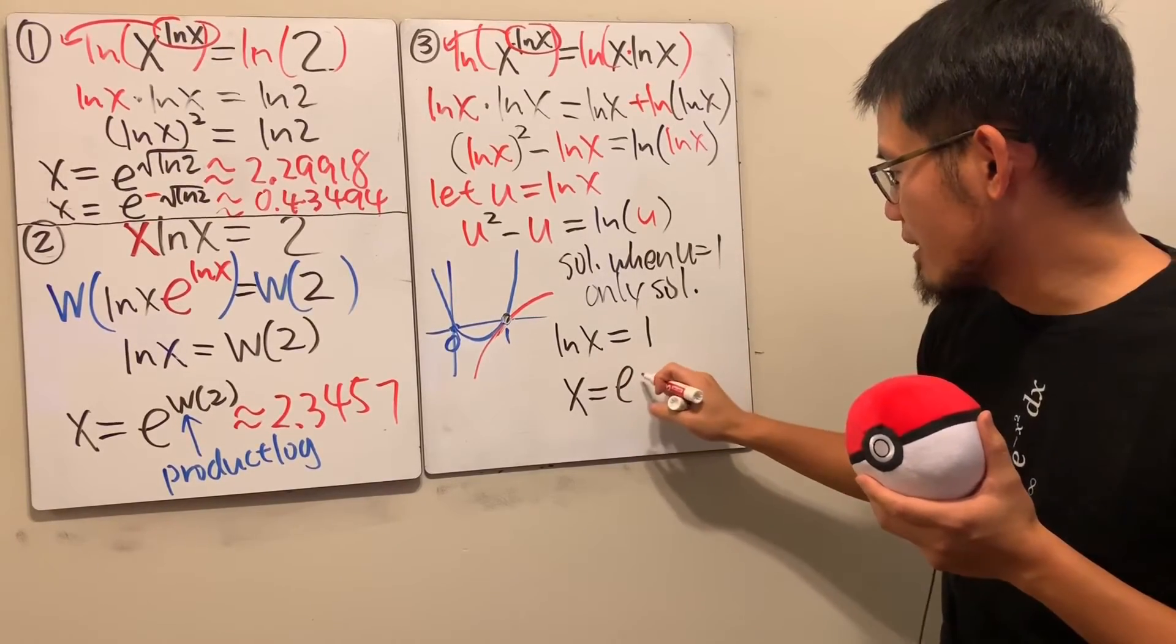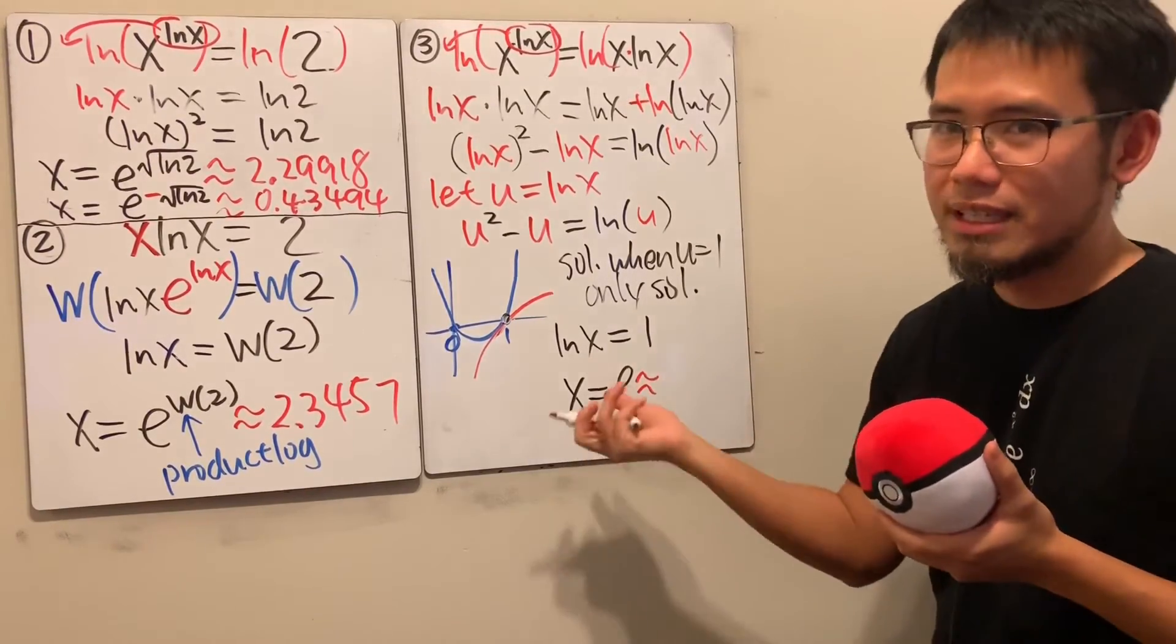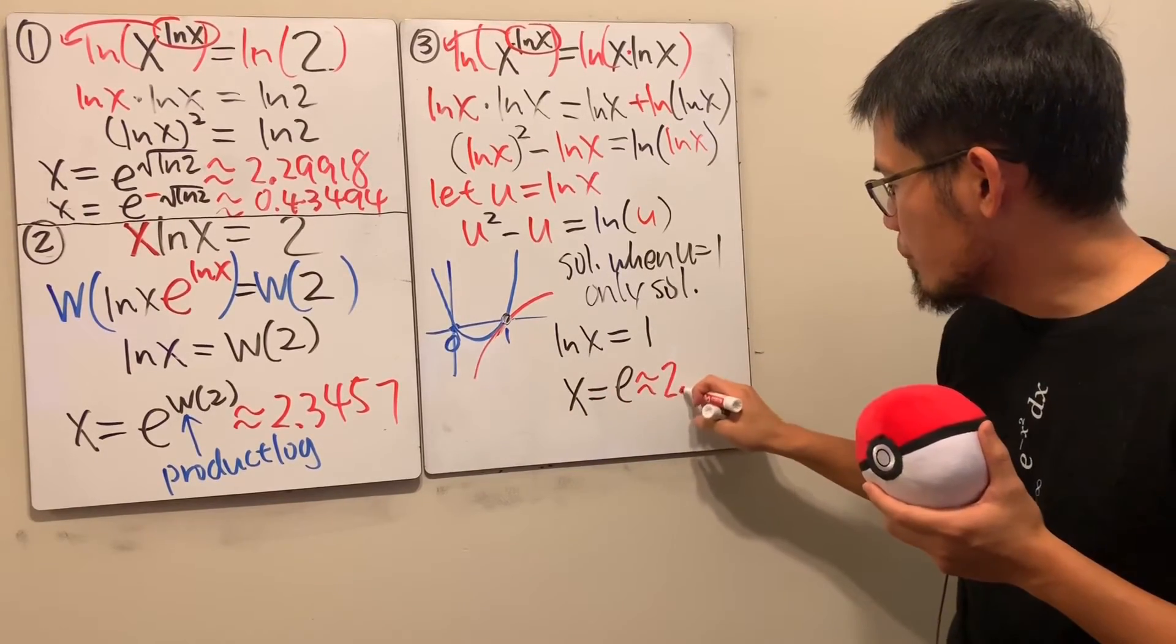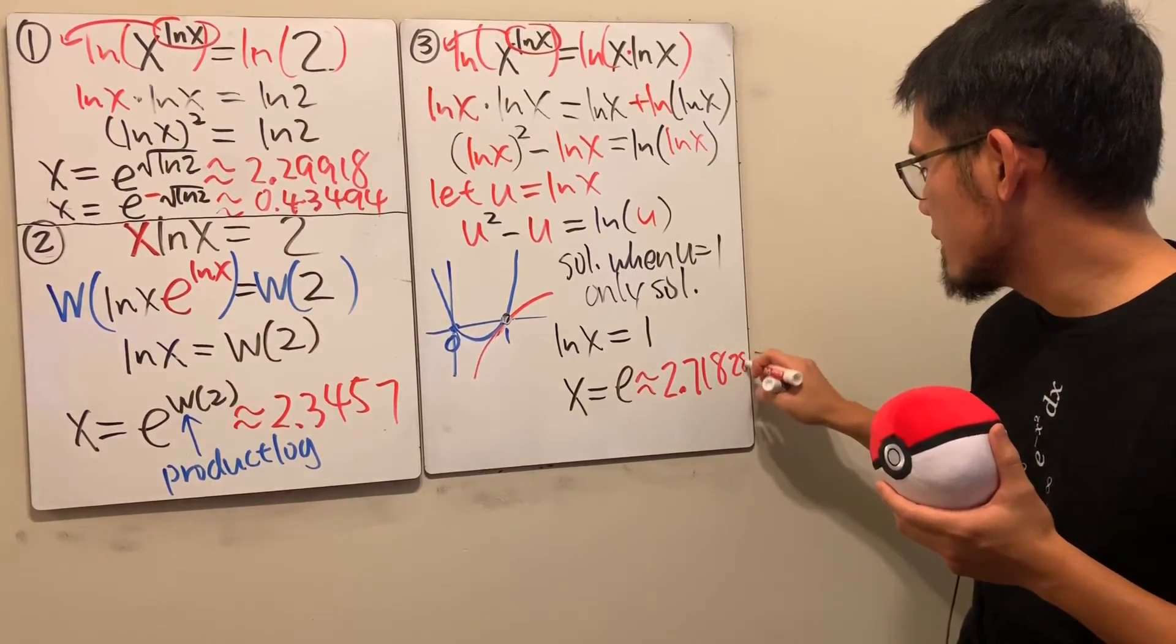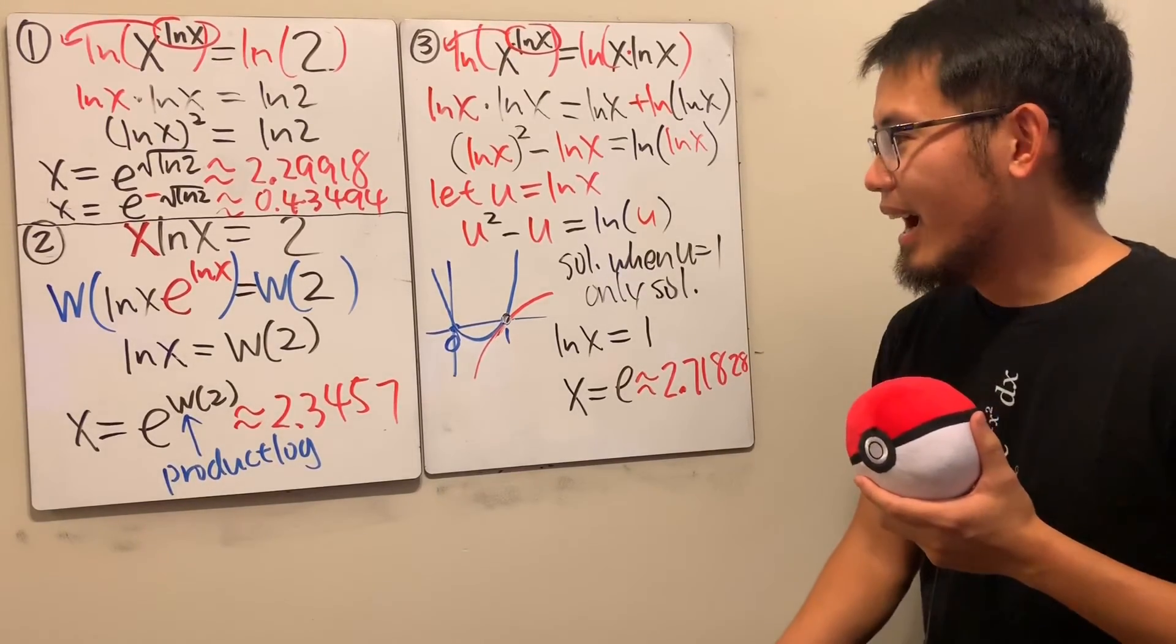And, you know, this right here technically needs no introduction, but I'll put this down the approximation anyway. 2.718. 2.8. And so on, so on, so on.